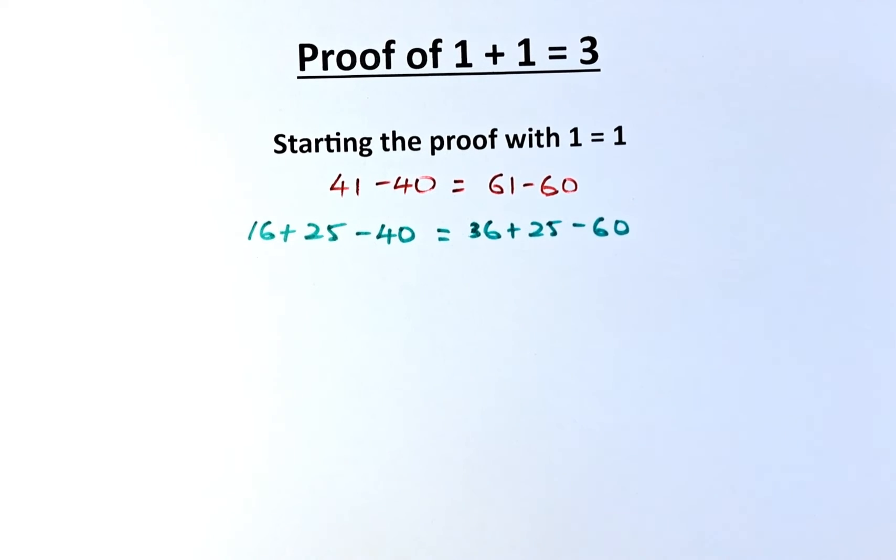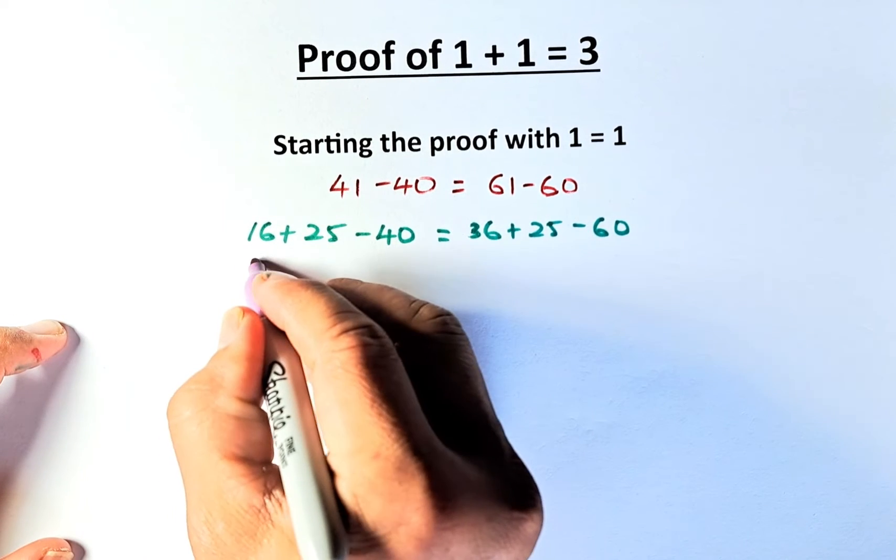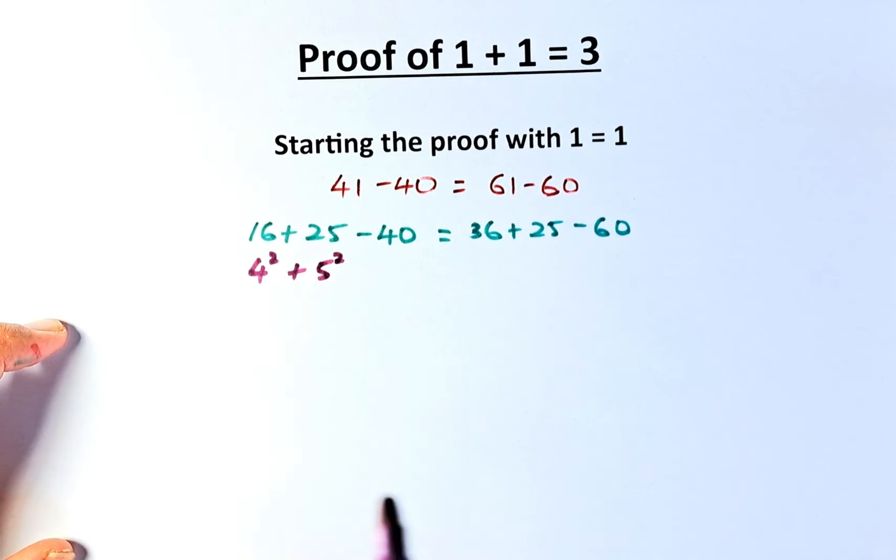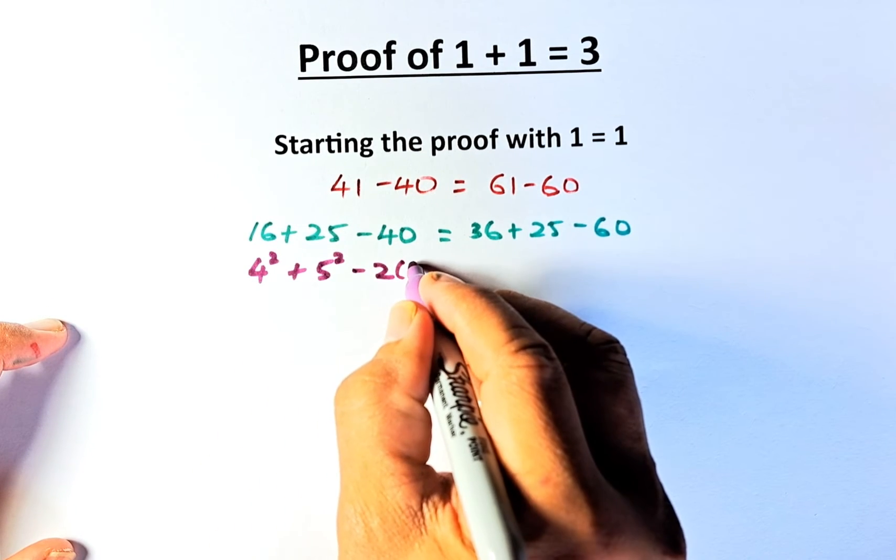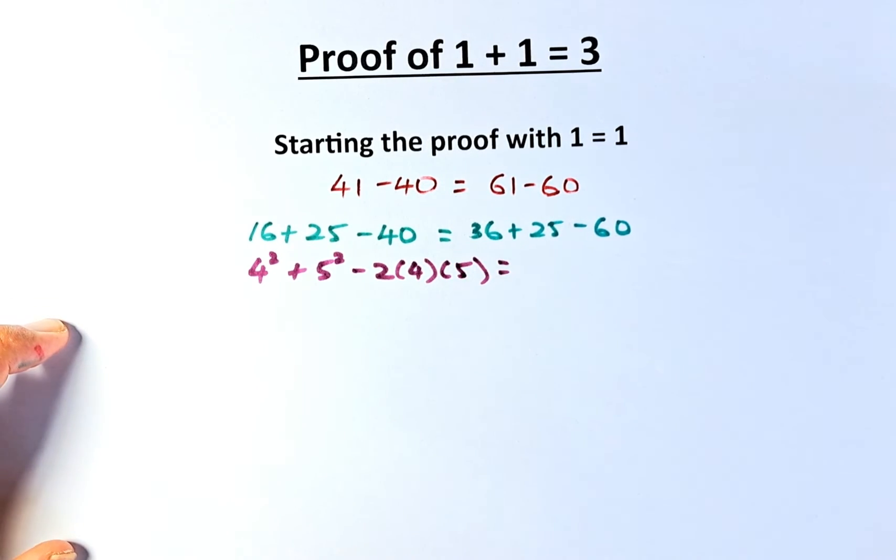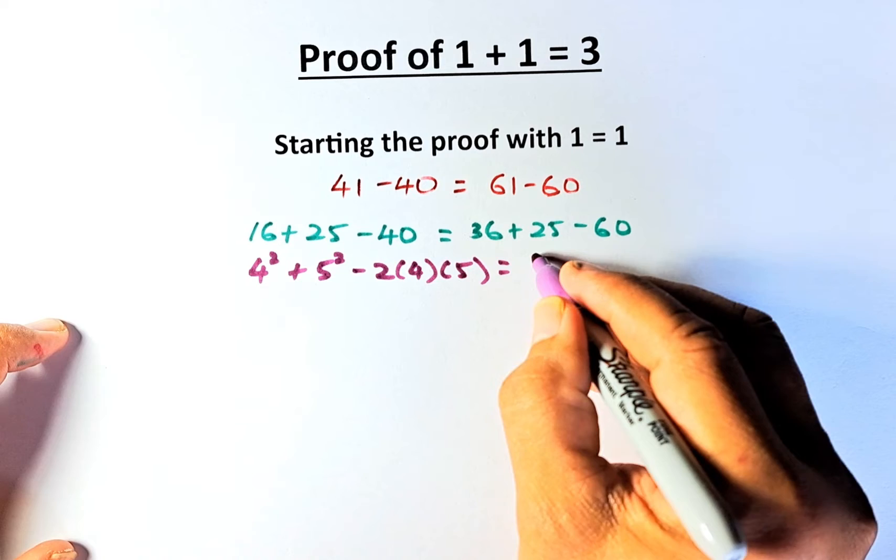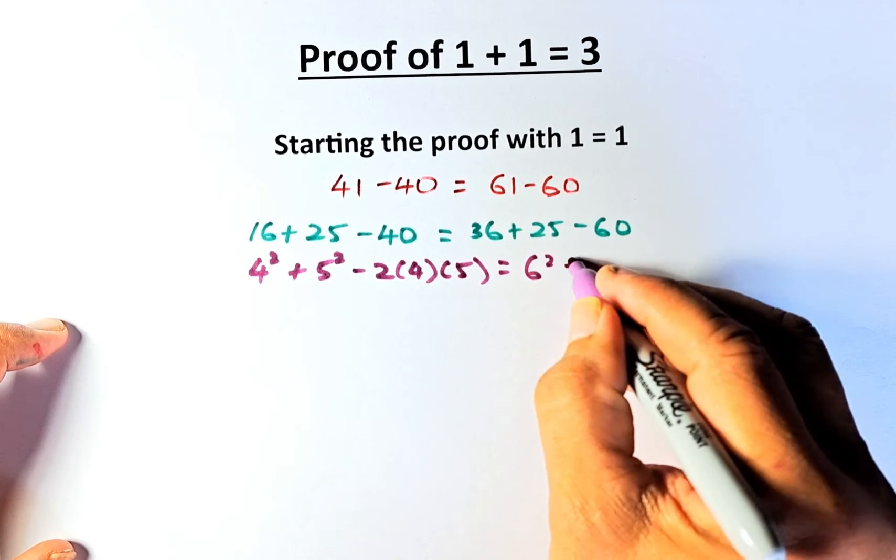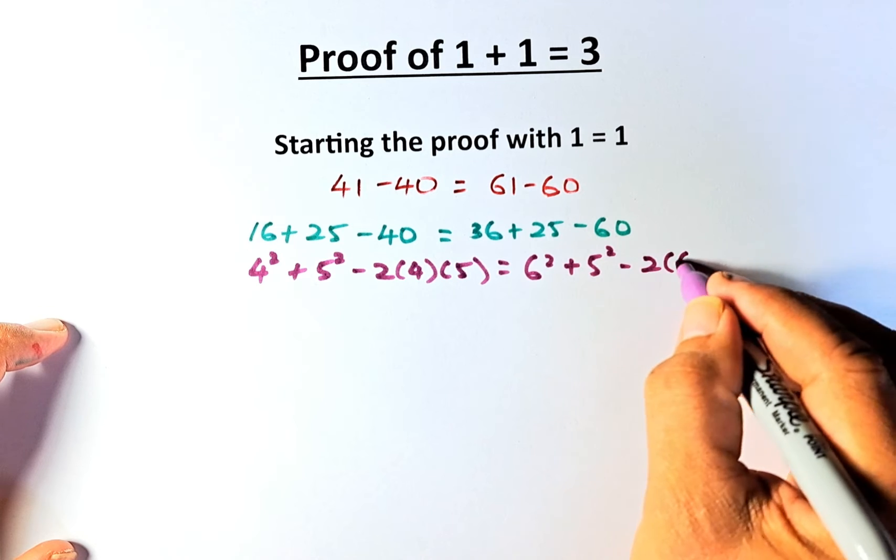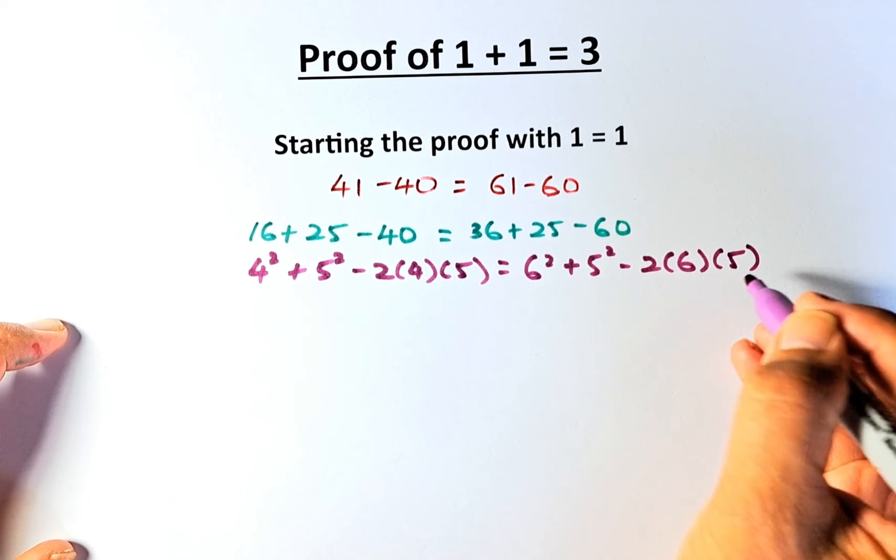Now we are going to simplify that. 16 is the same as 4 squared. 25 is 5 squared. 40 is actually 2 multiplied by 4 multiplied by 5. And 36 is the same as 6 squared. 25 is 5 squared and 60 is 2 times 6 times 5.